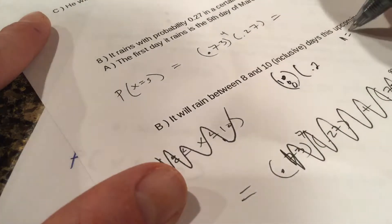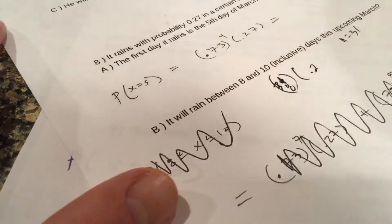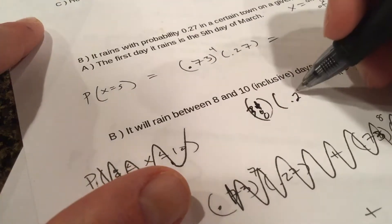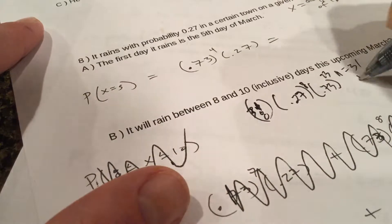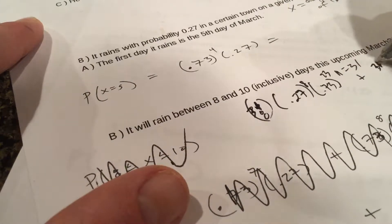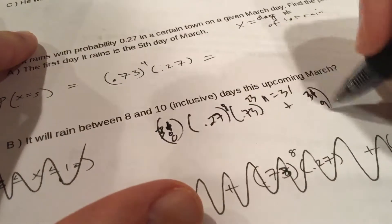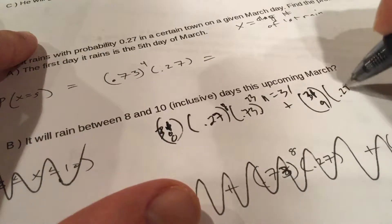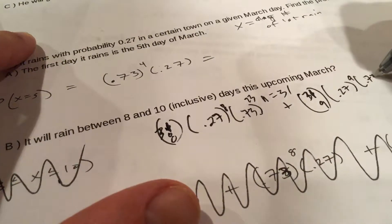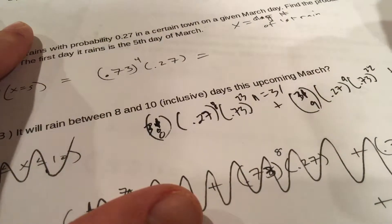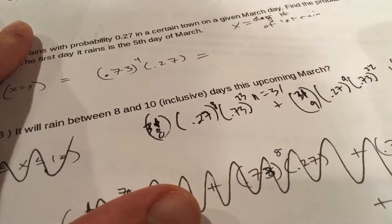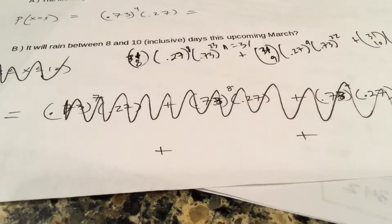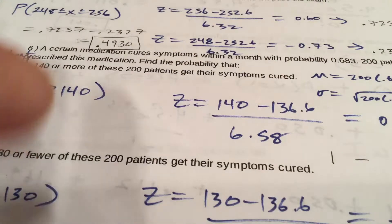31 choose 8, and I want it to rain 8 times and not rain 23 times, plus 31 choose 9. Here I want it to rain 9 times, not rain 22 times, and then finally 31 choose 10. I want it to rain 10 times, not rain 21 times. Alright there you go, my bad there. Type it in the calculator. Your quiz is gonna have nine questions, nine questions exactly just like you see here, big hint hint, wink wink.